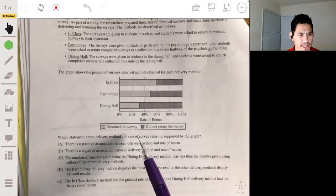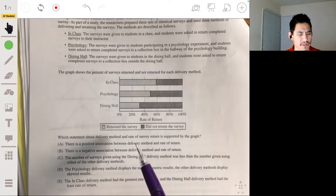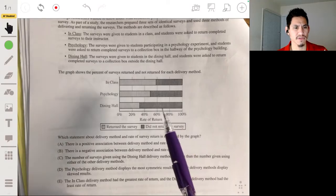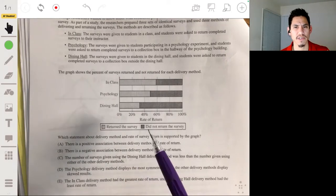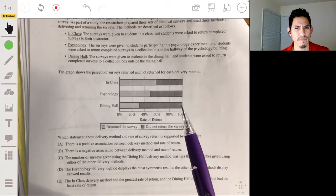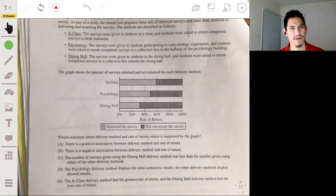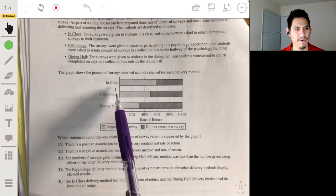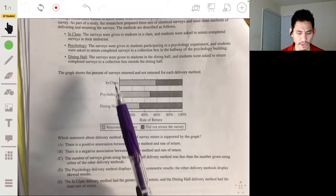So which statement about delivery method and the rate of return is supported by the graph? There's a positive association between delivery method and rate of return. No, you can't say anything about the association because they're not both quantitative variables. I don't know what they're now. Hopefully this problem feels pretty easy to you. Sometimes I feel when this problem is like this simple, there's something else going on, but I think they're really just testing that you understand that the type of environment or the class is not a quantitative variable. It's a categorical variable.